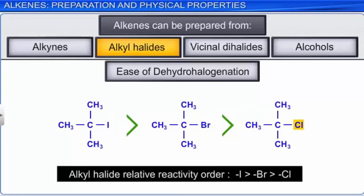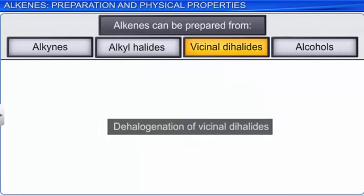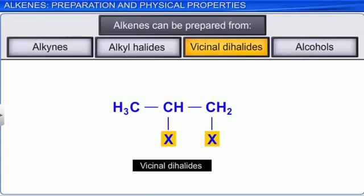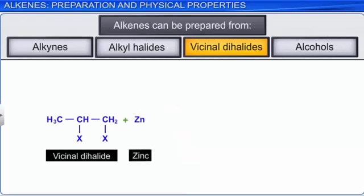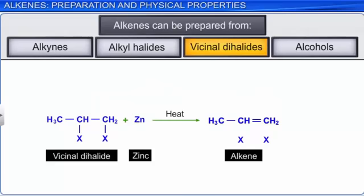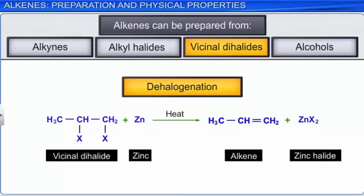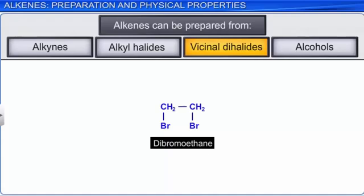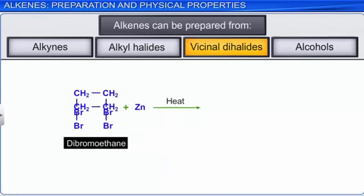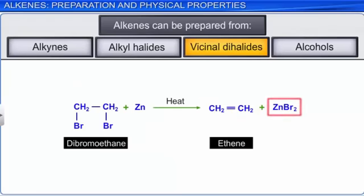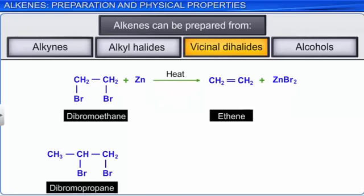Another way to obtain alkenes is by the dehalogenation of vicinal dihalides. In vicinal dihalides, the two halogen atoms are attached to two adjacent carbon atoms. When such dihalides are treated with zinc metal, the zinc atom removes the two halogen atoms, forming zinc halide, leaving behind an alkene in the process. This reaction is also called dehalogenation, as zinc removes two halogen atoms simultaneously. For example, when dibromoethane is treated with zinc, it forms ethene and zinc bromide. And when 1,2-dibromopropane is treated with zinc, it forms propene and zinc bromide.